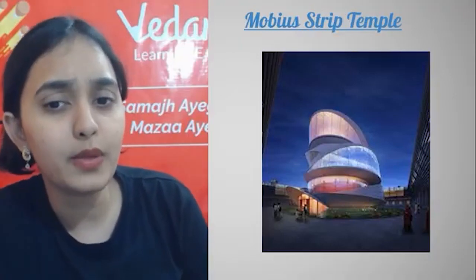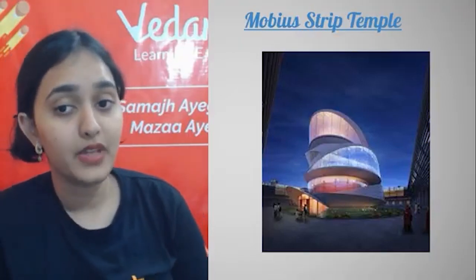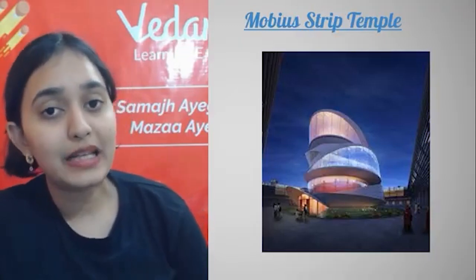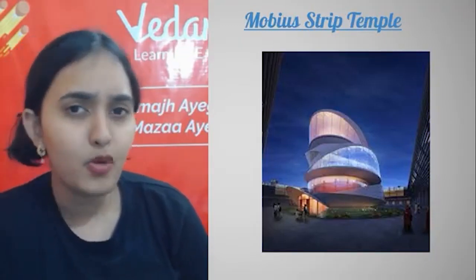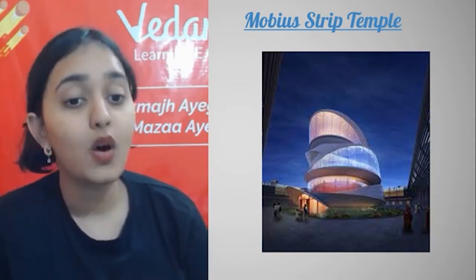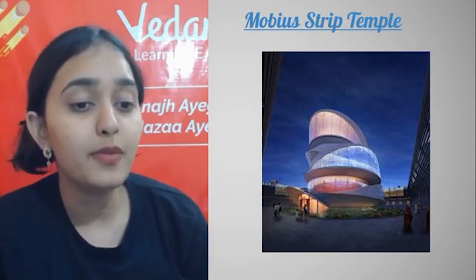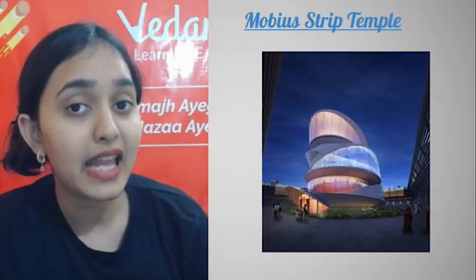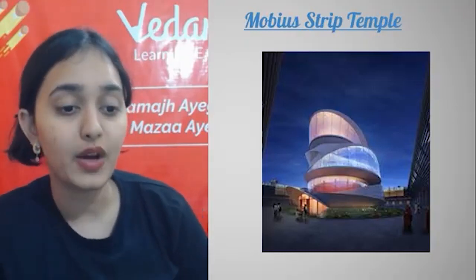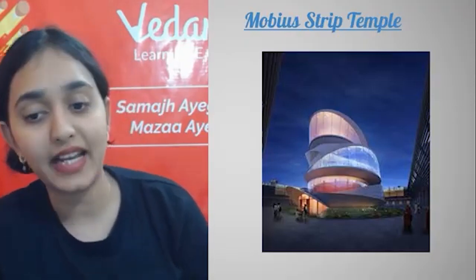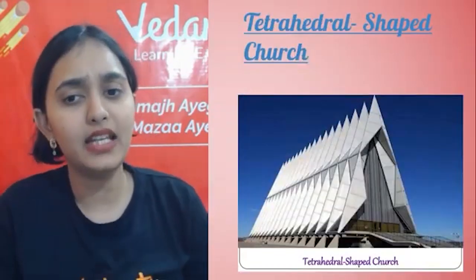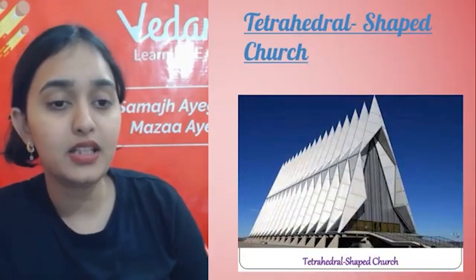Do you know about the Möbius Strip Temple? This Möbius Strip Temple is basically a geometry-based temple. A Möbius strip is a continuously closed surface with only one side, formed from a rectangular strip by rotating one end 180 degrees and joining it with the other end. This is the kind of design used in the Möbius Strip Temple.